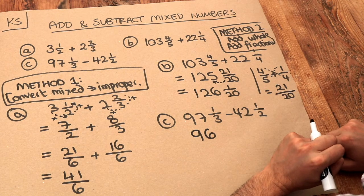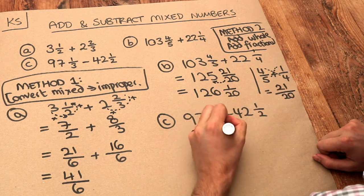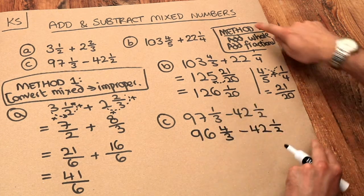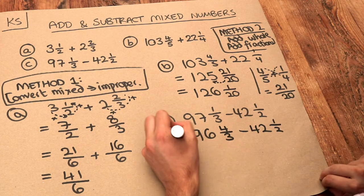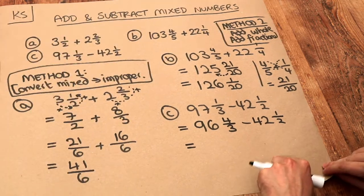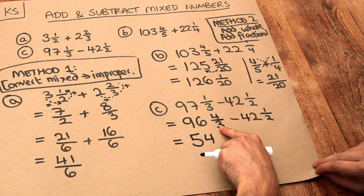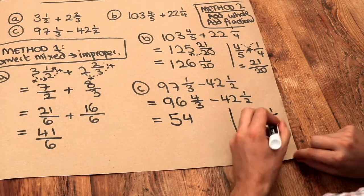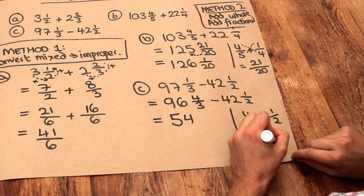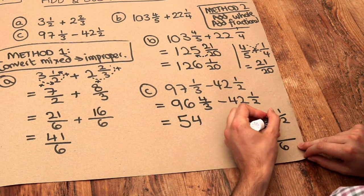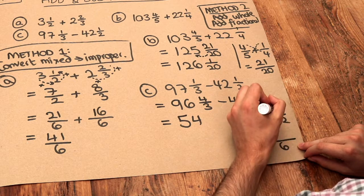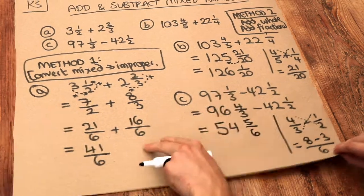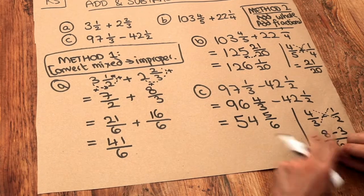How many extra thirds is that? Well, there are three thirds in a whole, so we get three extra thirds, bringing the fraction up to four thirds. Now we can subtract: 96 minus 42 is 54, and four thirds minus a half — multiplying the denominators gives six, then cross multiplying the numerators: four times two is eight, minus one times three is three, giving five sixths. So the final answer is 54 and five sixths.